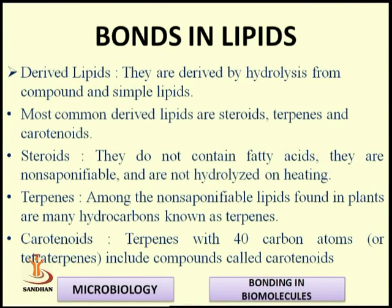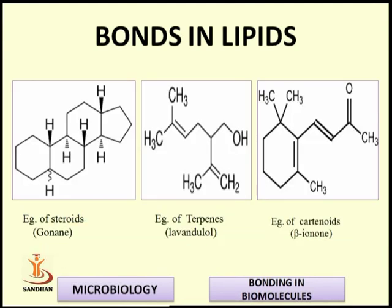Derived lipids are derived by hydrolysis from compound and simple lipids. The most common derived lipids are steroids, terpenoids (terpenes), and carotenoids. Steroids do not contain fatty acids and are non-saponifiable — they do not hydrolyze on heating. Terpenes are non-saponifiable hydrocarbons found in plants. Carotenoids are terpenoids with 40 carbon atoms, also called tetra-terpenes, with more than 40 carbon atoms included in some classifications.